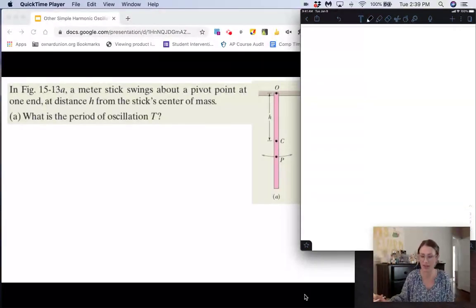So here's an example for a physical pendulum. We have a meter stick swings about a pivot point at one end at distance h from the stick's center of mass, and we want to know what is the period of oscillation T, capital T.